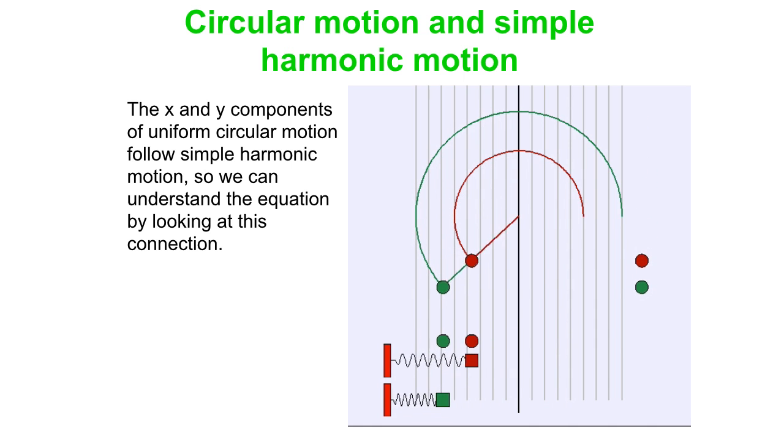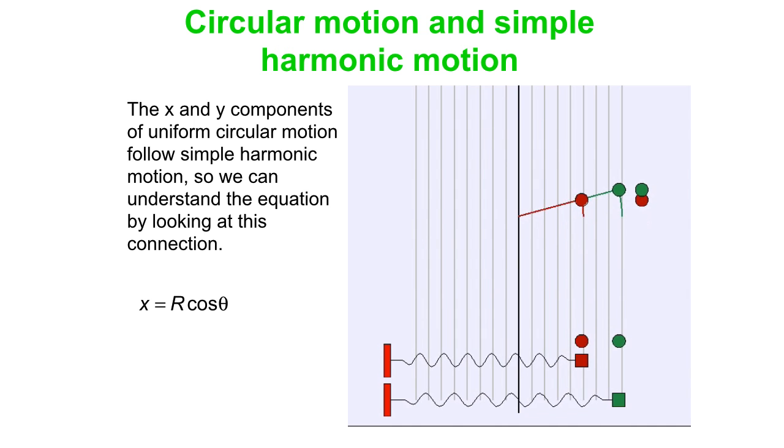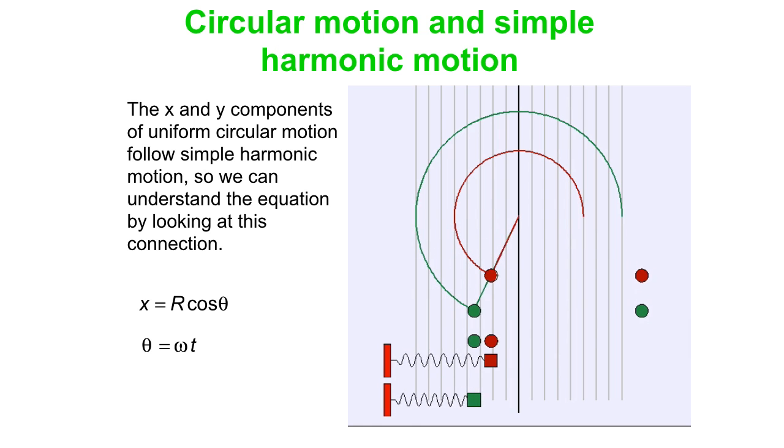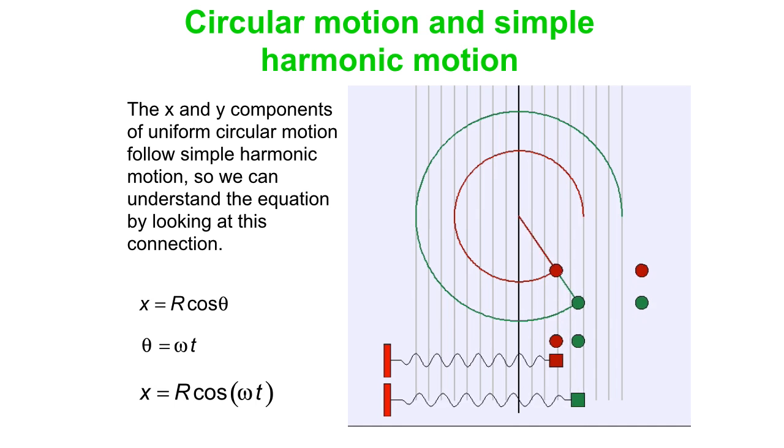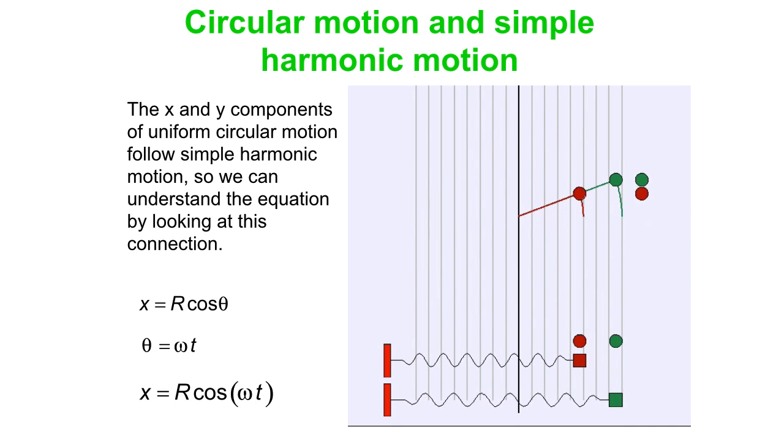If you plot the x component, we can say x is r cos(θ), but θ is simply ωt, it's a constant angular velocity. So you can write that as x equals r cos(ωt), and that is exactly pretty much what we wrote down for our position as a function of time equation for circular motion.